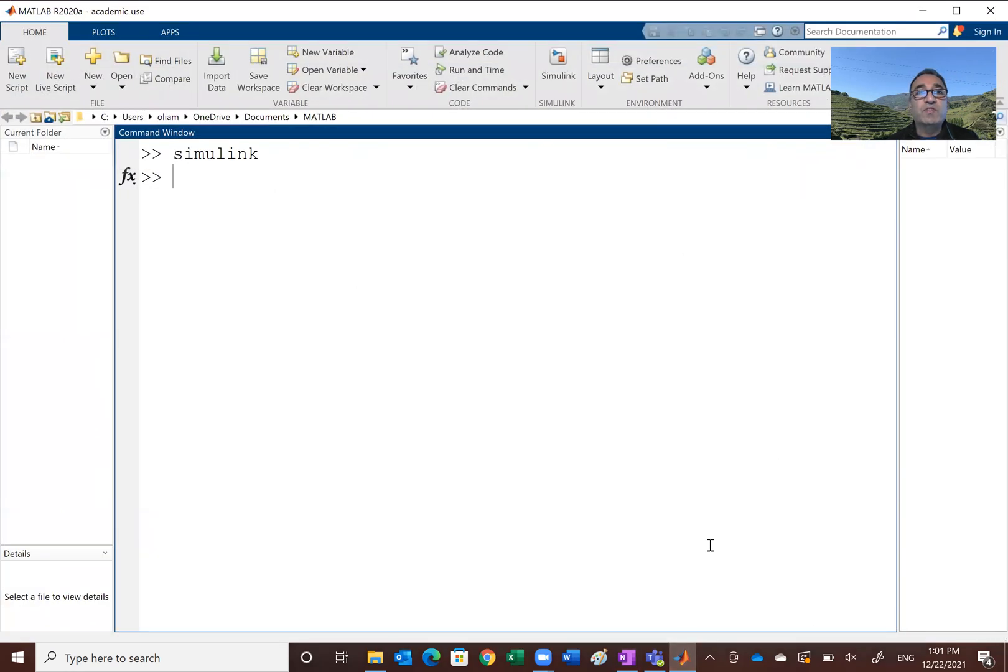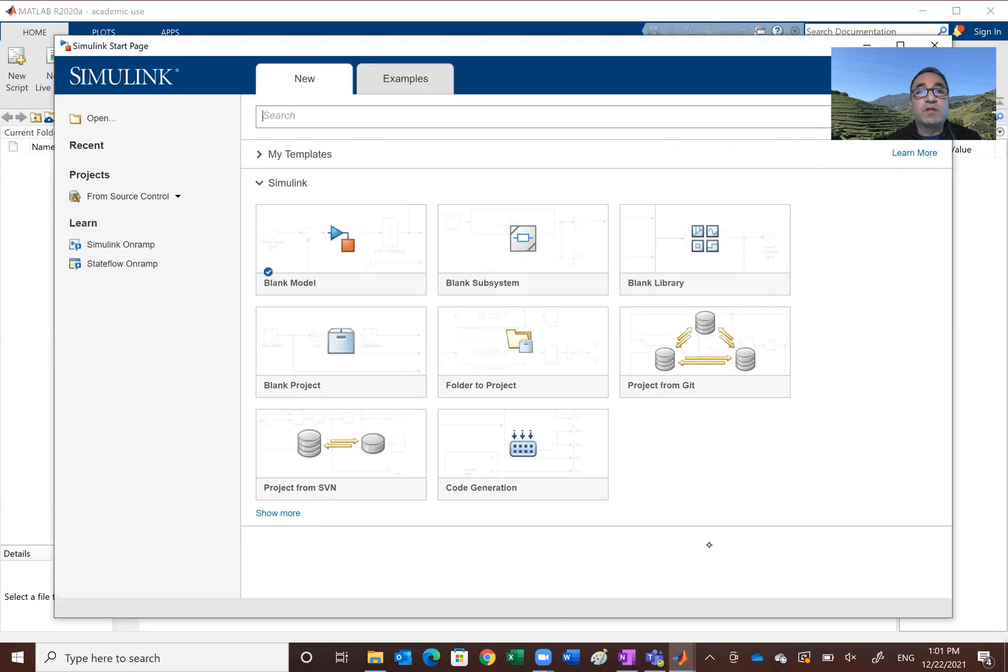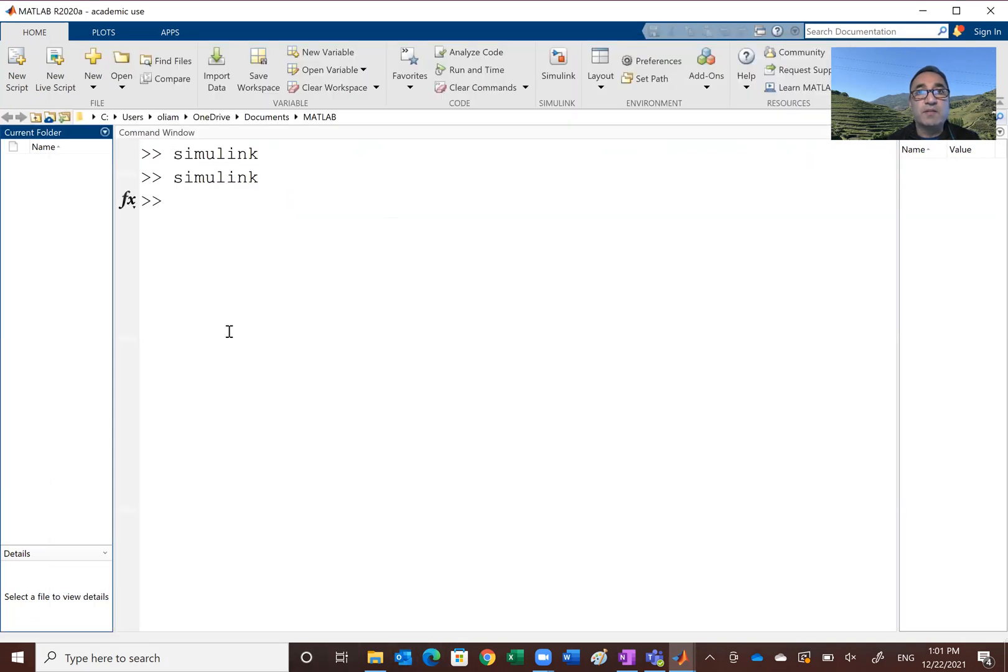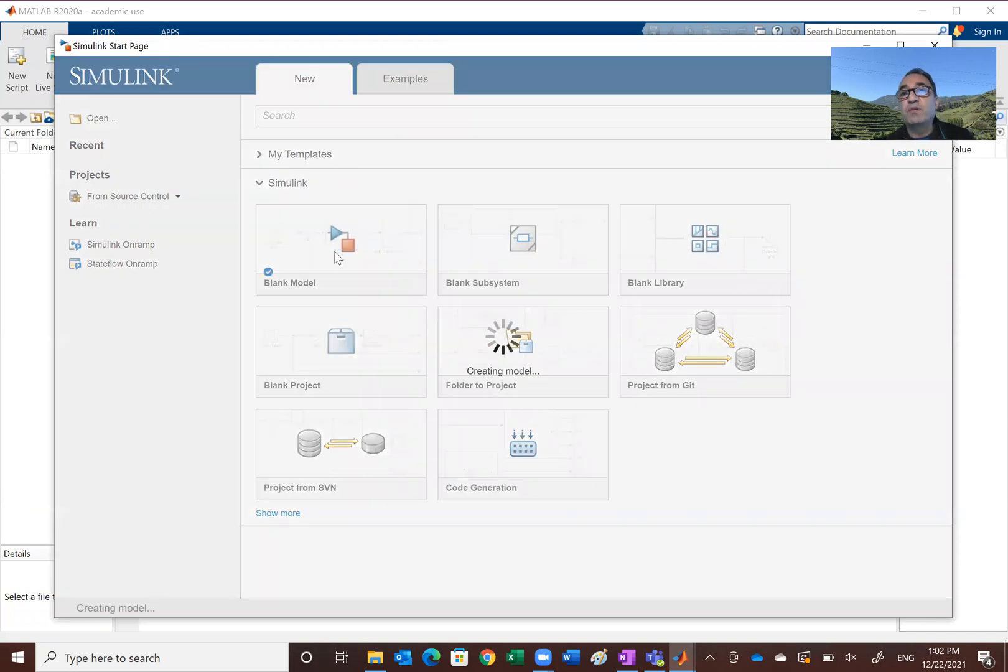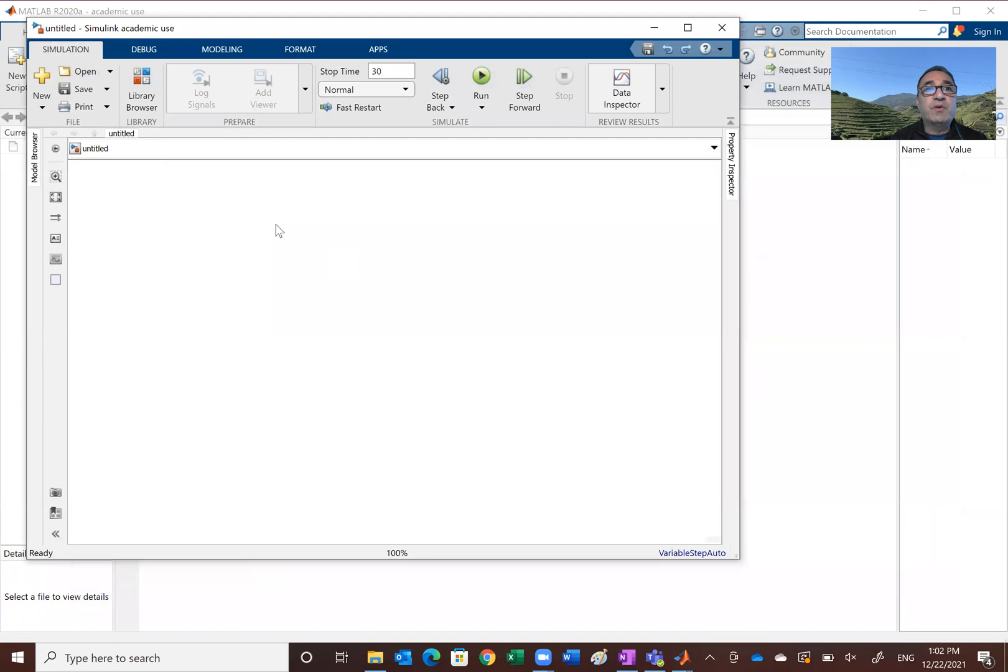So why don't we go and start looking at the MATLAB. So as you've seen in the past, you could initiate the Simulink toolbox by just writing Simulink or click on just the Simulink icon here. So once you get the Simulink, you want to open a blank model. So you get your blank model.